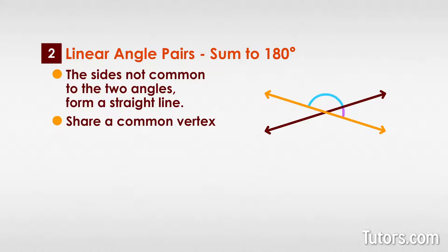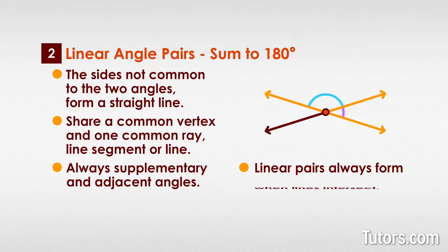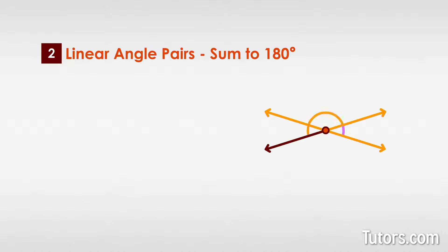Linear pairs always share a common vertex and one common ray, line segment, or line. They are always supplementary and adjacent angles, and the linear pairs always form when lines intersect. Just two intersecting lines creates four linear pairs. Every pair shares a vertex, the point of intersection, and one common side.